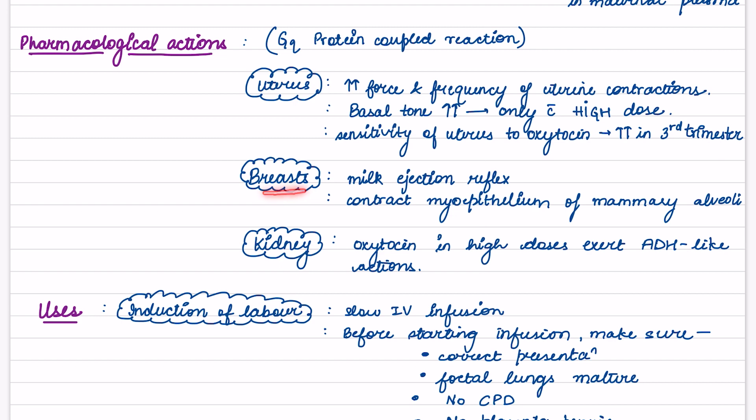Now breasts, it causes milk ejection reflex and contracts the myoepithelium of mammary alveoli. In kidneys, oxytocin in high doses exerts ADH-like actions.